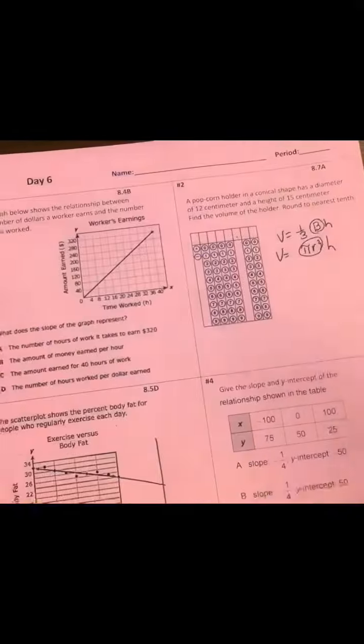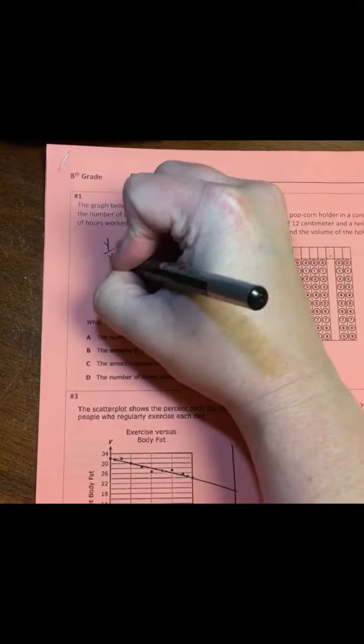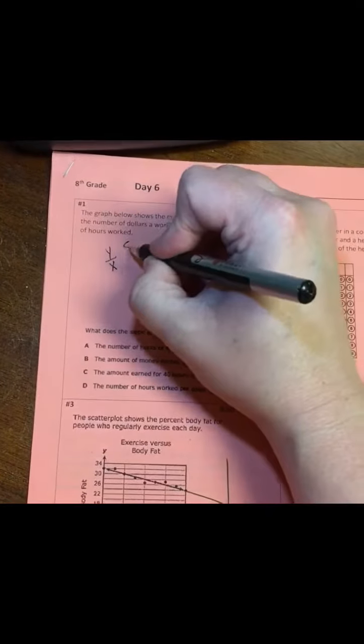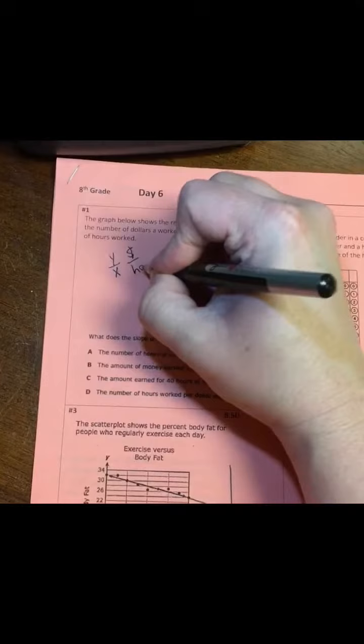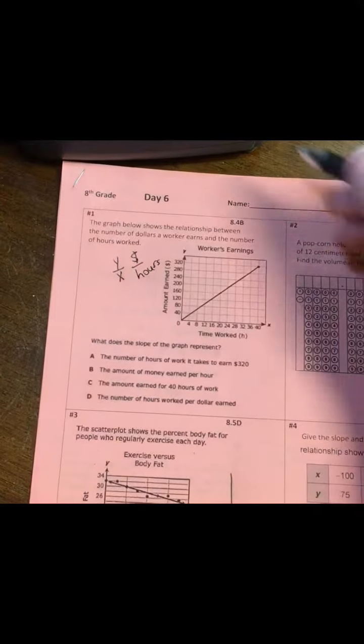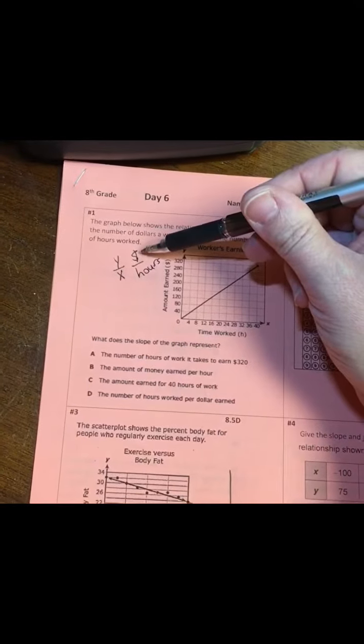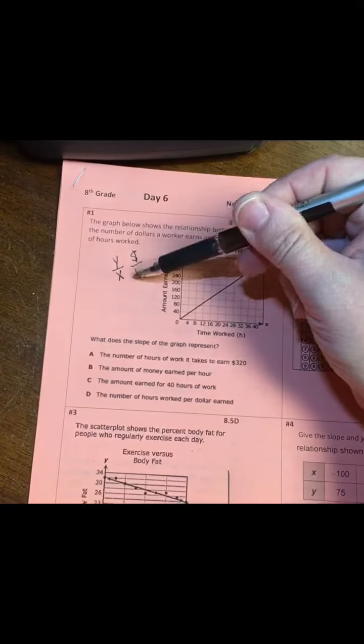Okay, so our slope is going to be the labels for y over the labels for x. So y is the amount of money and x is the time worked in hours.